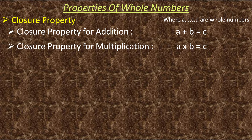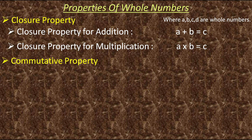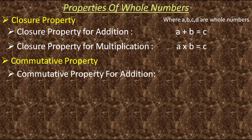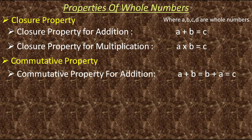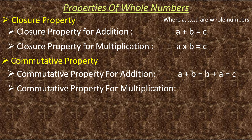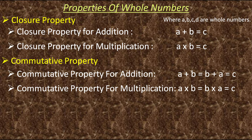Next comes commutative property. Commutative property for addition says that we can add any two whole numbers in any order. Same way, commutative property for multiplication says that we can multiply any two whole numbers in any order.